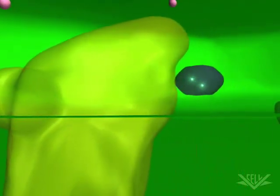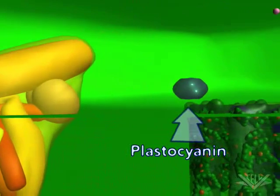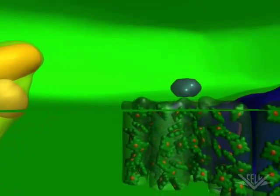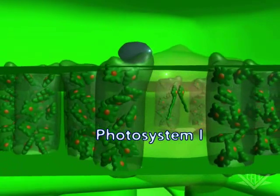The electrons are next transferred to plastocyanin, another mobile carrier. Next, the electrons are transferred from plastocyanin to the photosystem I complex.